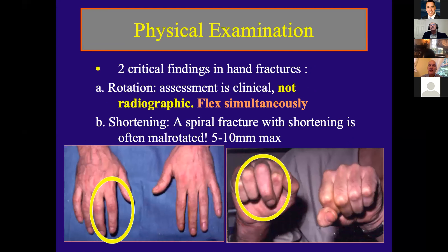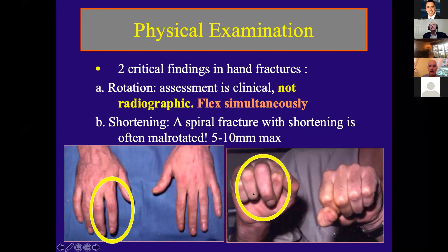A couple of critical findings in hand fractures somewhat unique to hand injuries. Number one is rotation. Rotation is often a clinical assessment, not a radiographic assessment — you can pick up gross rotation on x-ray, but often it's a clinical finding. The trick is to have the fingers flex simultaneously. In a normal hand, if you make a fist with everything but your small finger and then bend the small finger, it will overlap the ring finger. So you have to have the patient move their finger simultaneously, and any malrotation should be pretty evident.